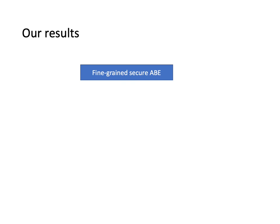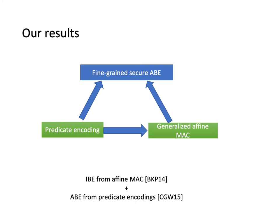In this work, we propose the first fine-grained secure ABE scheme, which is secure against adversaries with bounded circuit depth. It borrows the BKP framework by Blazy and others, which constructs IBE from affine MAC, and the CGW framework by Chen and others, which constructs ABE from predicate encodings. We first propose a fine-grained version of the affine MAC in the BKP paper and generalize it by using parts of predicate encoding. And then we combine it with other parts of the encoding with some new techniques to construct ABE schemes.